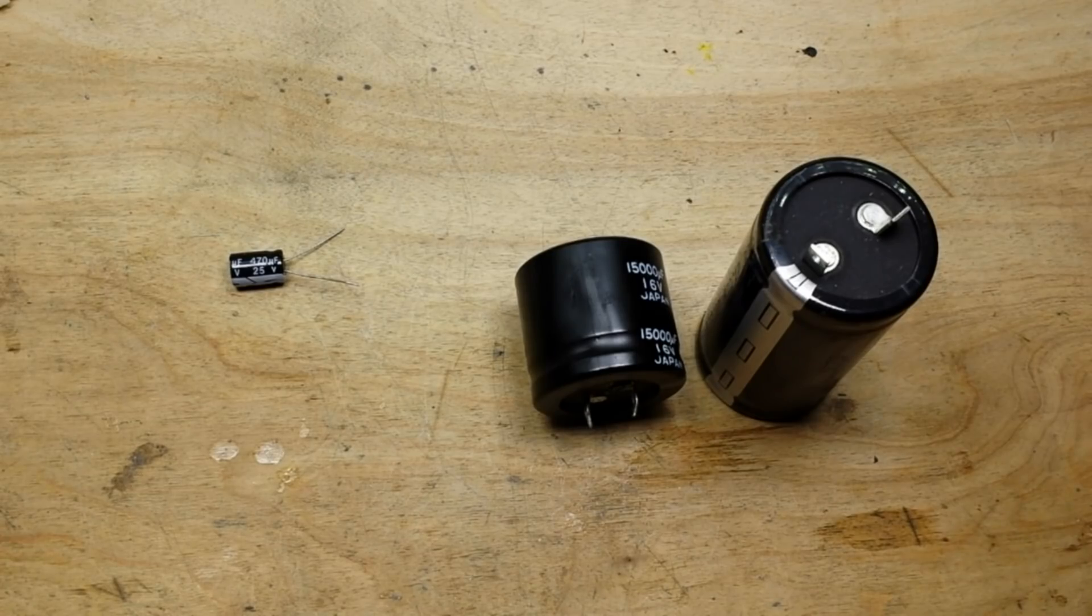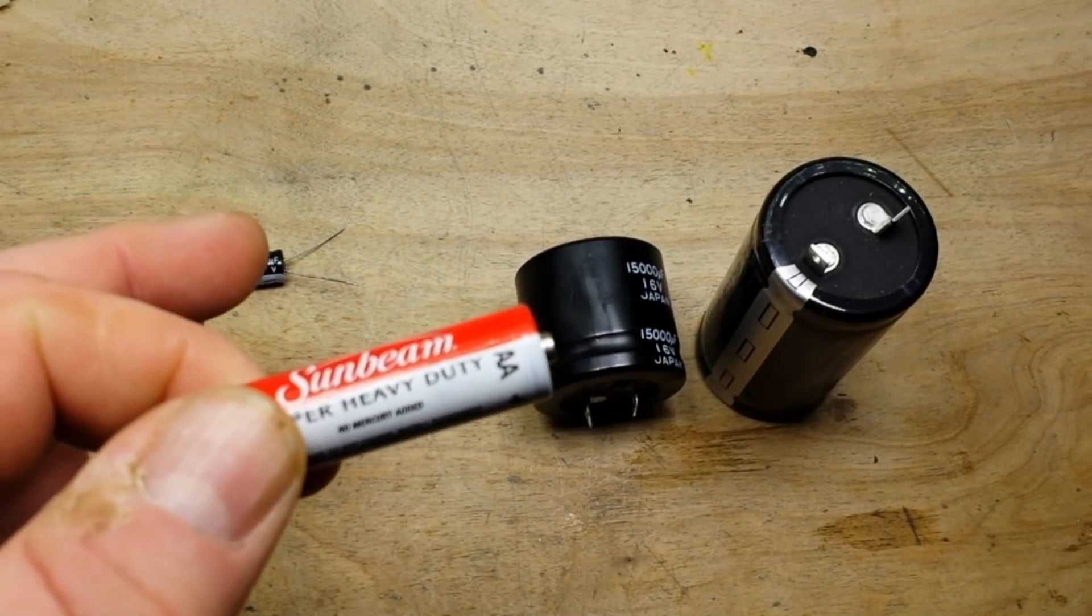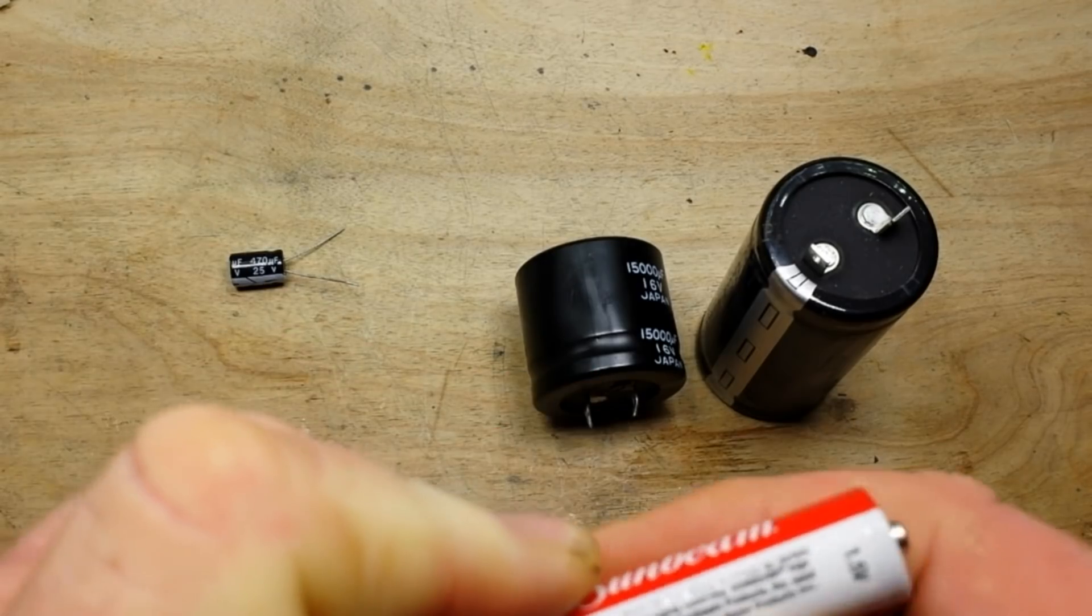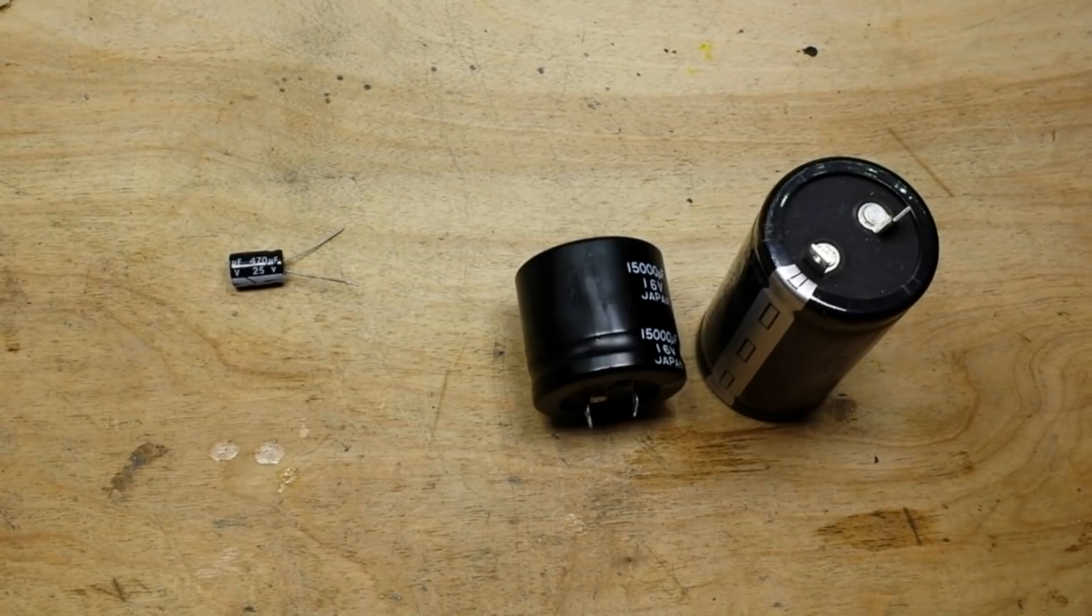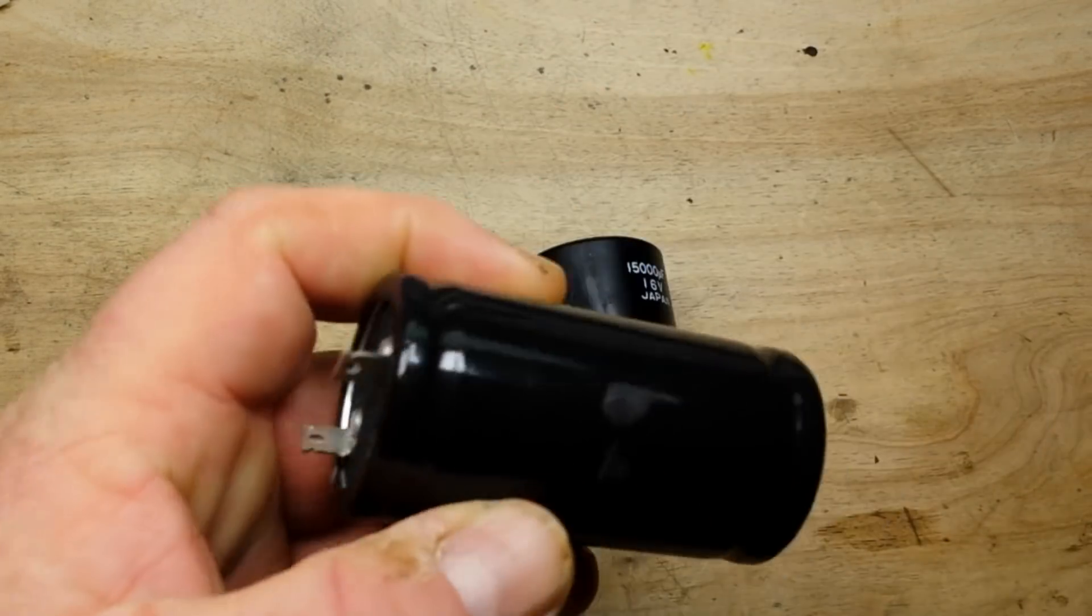For instance this isn't a rechargeable battery but the principle is the same. This is a double A battery and it's going to have a voltage of about 1.5 volts and it is going to have that 1.5 voltage until you get down to about a 50% discharge. It's going to go down as low as 1.2, 1.1 volts, but it's going to maintain that voltage throughout the cycle of discharge.